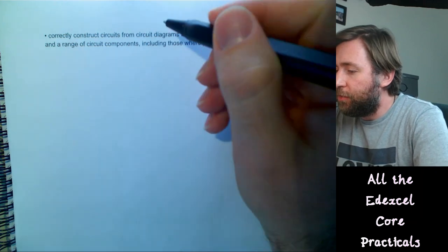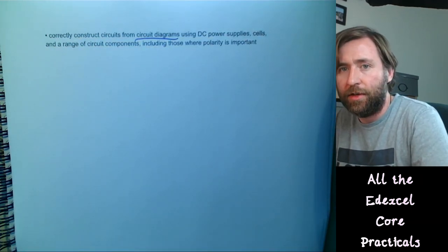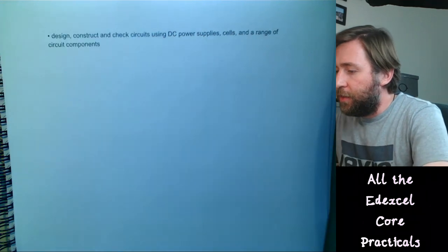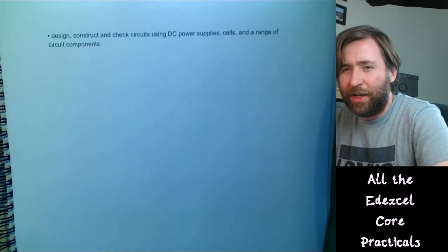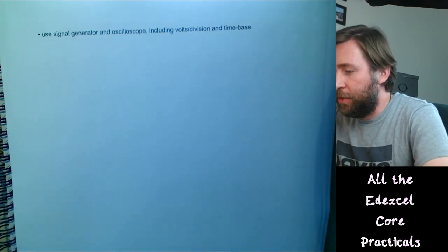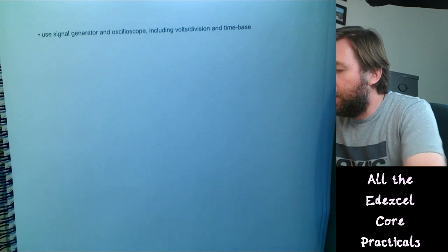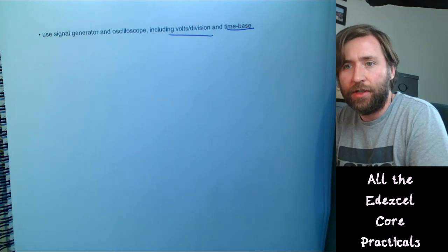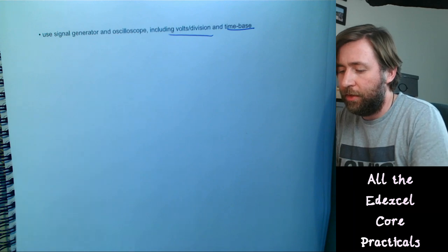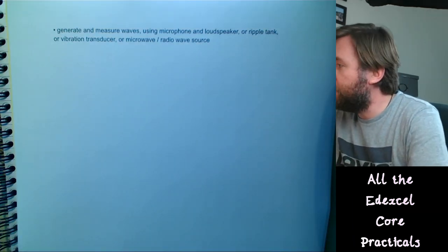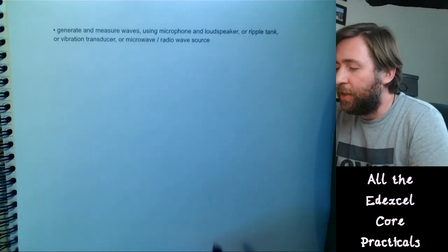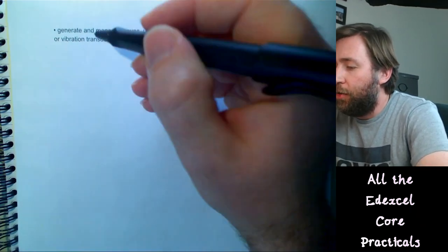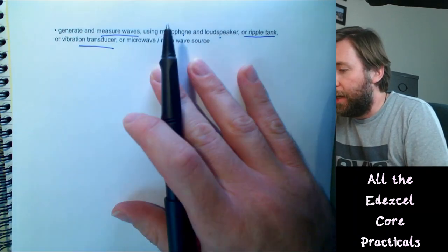You need to correctly construct circuits from circuit diagrams using DC power supplies, and understand circuit diagrams. Use a range of circuit components including those where polarity is important — such as a diode — and design, construct, and check circuits using multimeters. You also need to know how to use a signal generator and oscilloscope, including setting volts per division and time base to get greater accuracy.